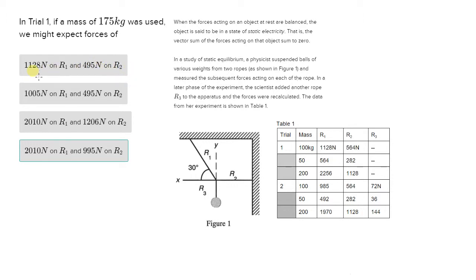So let's start with answer choice A. It suggests that if a mass of 175 kilograms was used, we might expect forces of 1,128 Newtons on R1 and 495 Newtons on R2. Now, the first thing we should do is look and see where 175 kilograms should fit into this data on this table.